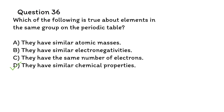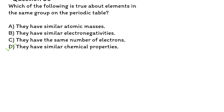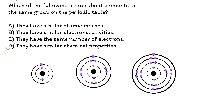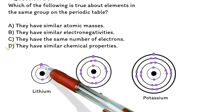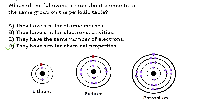Elements in the same group on the periodic table have the same number of valence electrons, which determines their chemical properties. Valence electrons are simply the electrons in the outermost shell or energy level of an atom. For example, elements in group 1, such as lithium, sodium, and potassium, all have one valence electron and are highly reactive. From these images, you can see that although these elements have different numbers of electrons, they all have just one electron on the last shell. Please check out UltimateGED.com for more lessons on atomic structure.